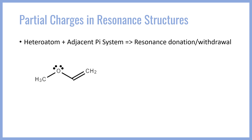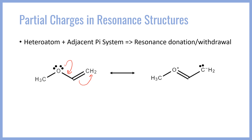Let's look at an example. Say we have a molecule with the heteroatom oxygen, which has lone pairs adjacent to a pi system — the double bond between two carbons. That lone pair can delocalize into the pi system. We can represent this with electron pushing arrows where the lone pair pushes down into that bond and kicks the double bond as a lone pair onto the carbon. This gives a resonance structure where oxygen carries a partial positive charge and the carbon carries a partial negative charge.